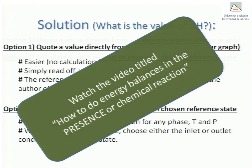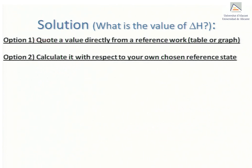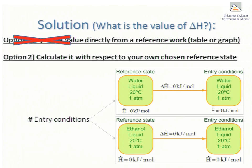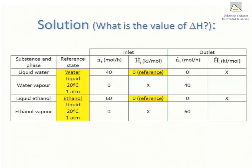We proceed to solve our example by the second method. We take as a reference state the inlet conditions and thereby effectively set to zero the molar enthalpy of the inlet water and ethanol streams. With these values recorded in the partially filled table, we find that all that remains to be calculated are the molar enthalpies of the water and ethanol vapor streams at the outlet of the process.